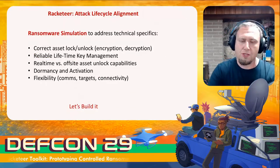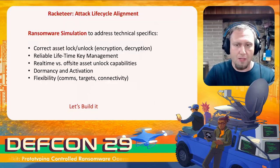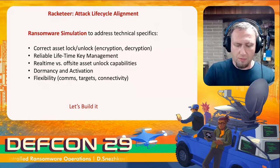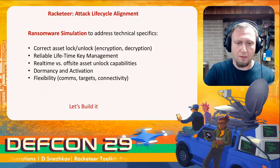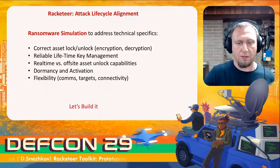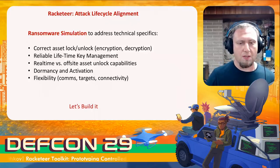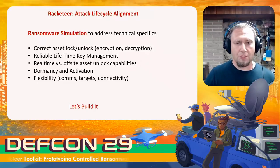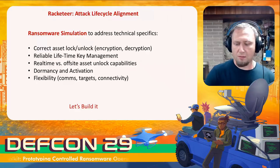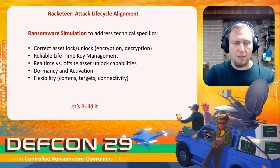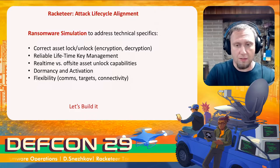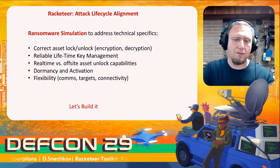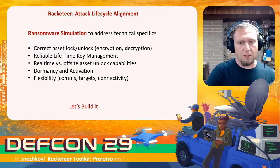If it is a ransomware simulation, what technical features does it need? We need to be correct and reliable in locking and unlocking assets to make sure the customer stays up. Real-time encryption versus offline decryption is very useful because in ransomware campaigns, decryption and encryption can happen separately, or the agent may die and you need to bring assets back to unencrypted form. Dormancy and activation are also needed — dropping the agent on the network does not mean it immediately starts encrypting things.